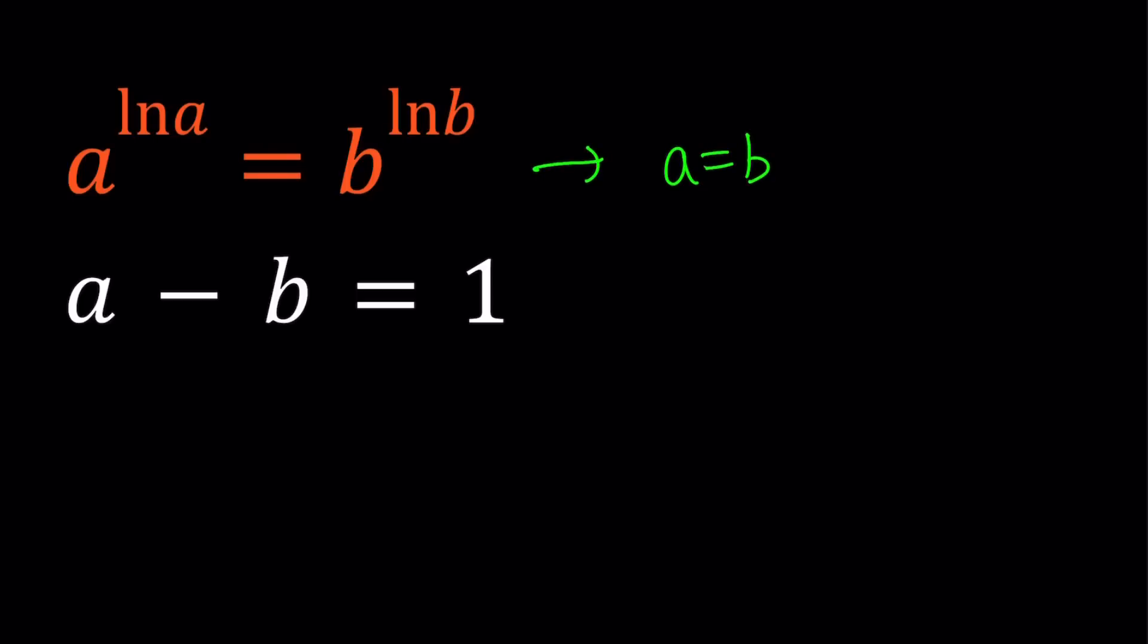Alright, now let's go ahead and check what happens with that. But if a is equal to b, and now if I replace a with b here, we get b minus b equals 1, which is 0 equals 1. And you're like, what? This is impossible. Then there are no solutions.